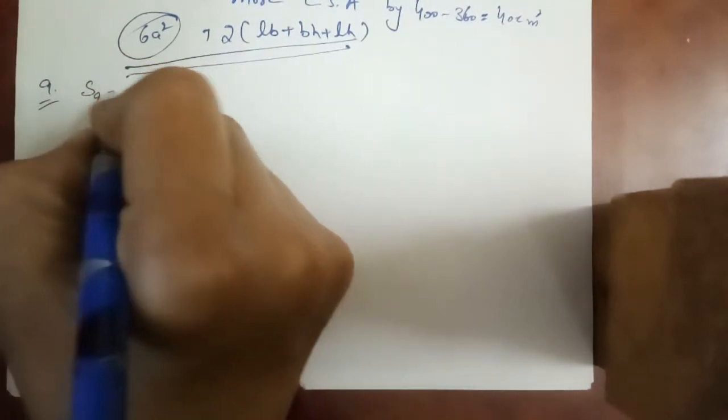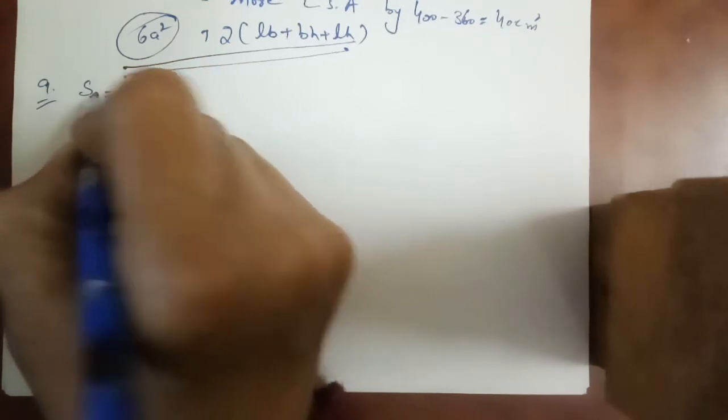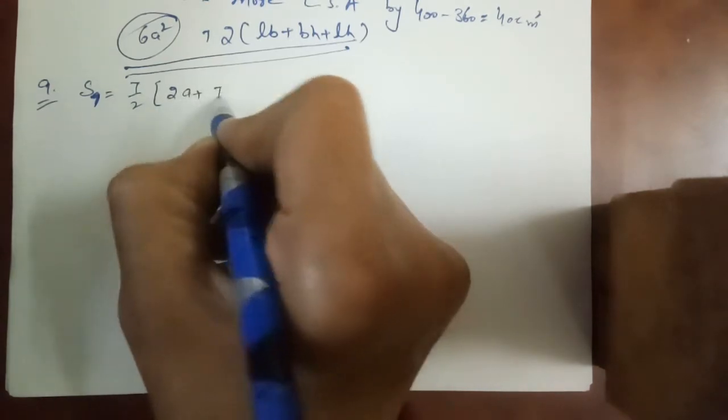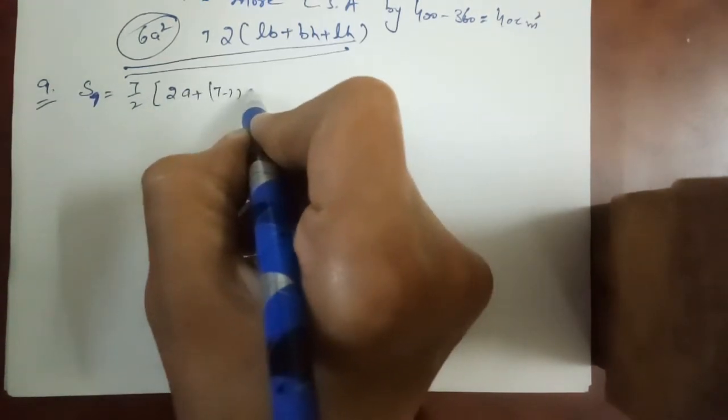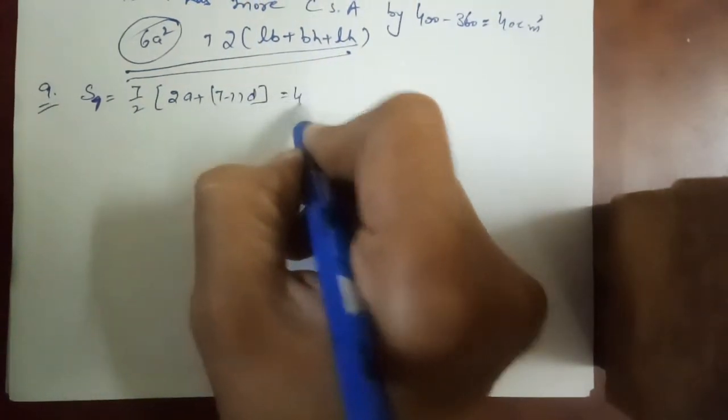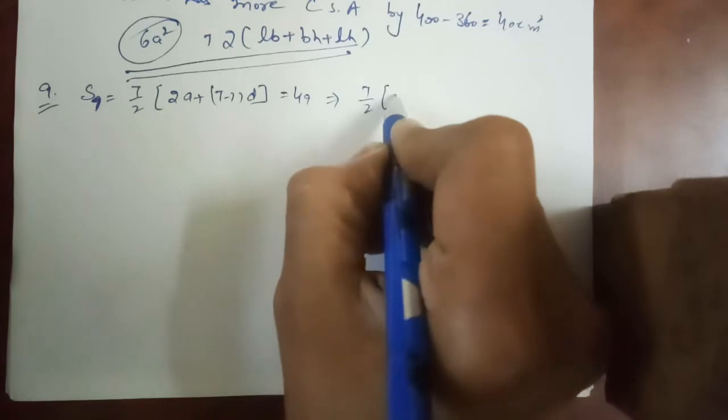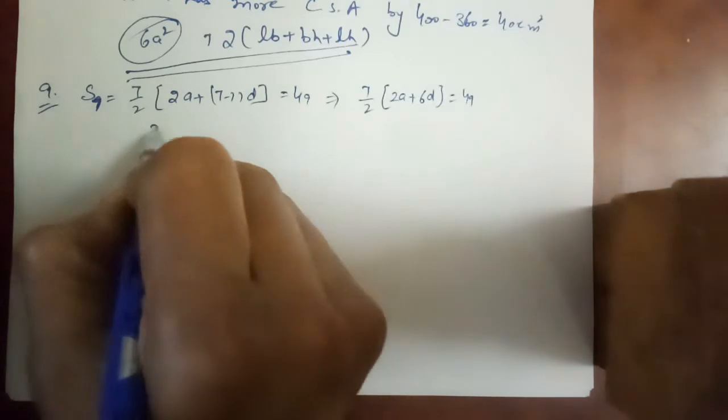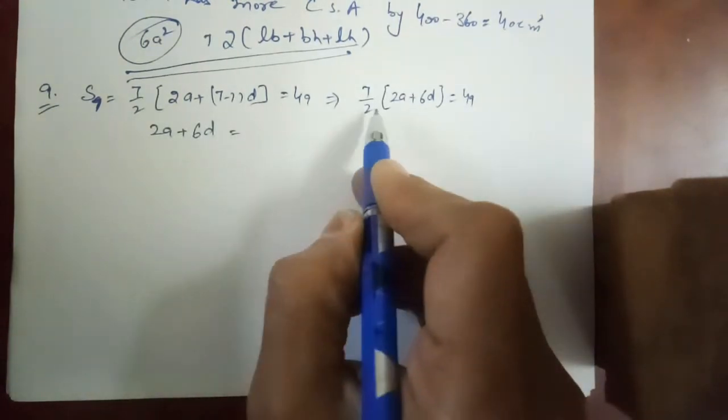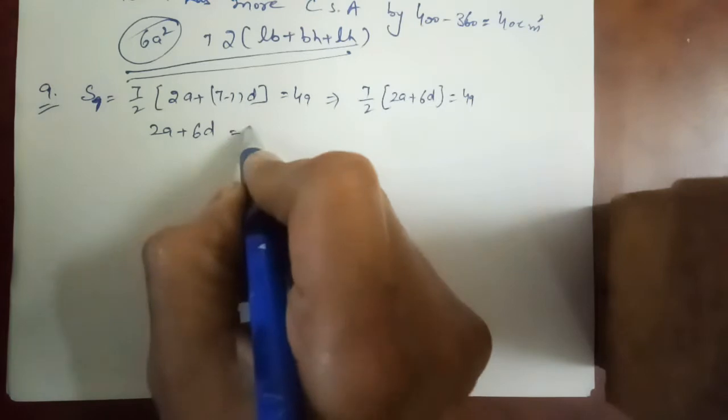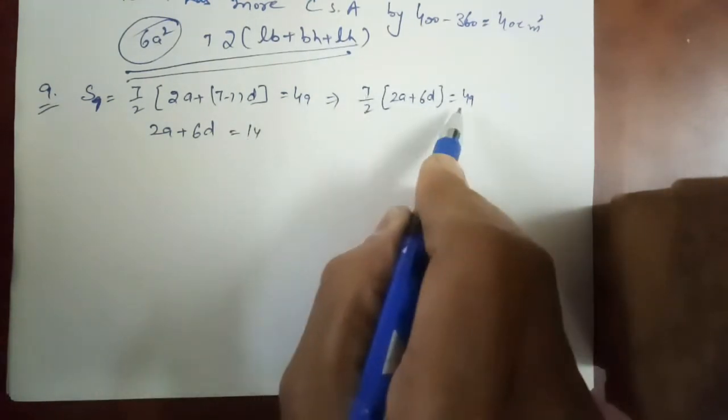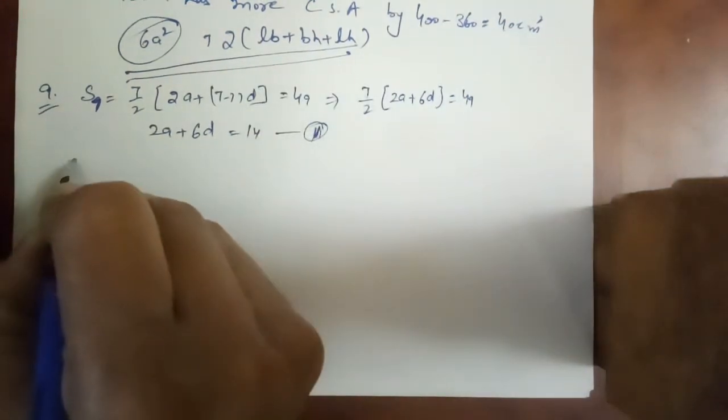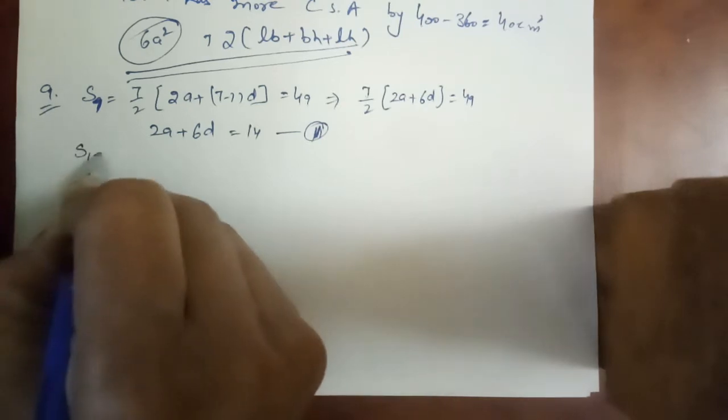Question number 9: sum of first 7 terms is equal to 7 by 2, 2A plus n minus 1 into D. A and D are not given to us. So it will be 7 by 2, 2A plus 6D is equal to 49. That is 2A plus 6D is equal to 14. This is equation number first.